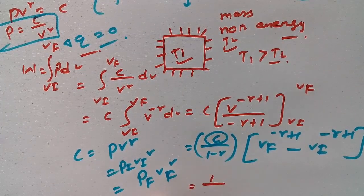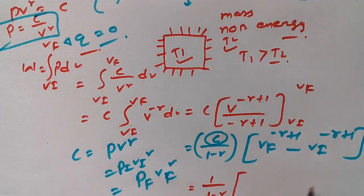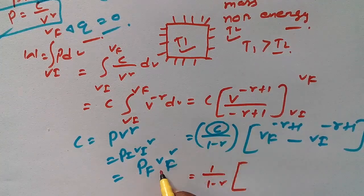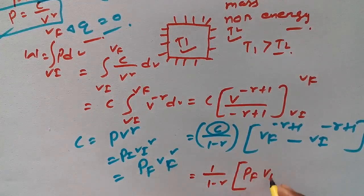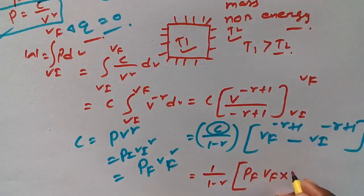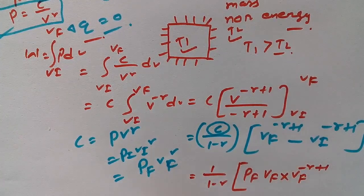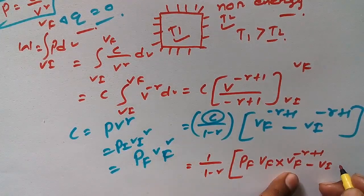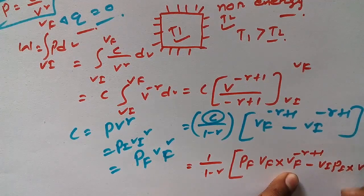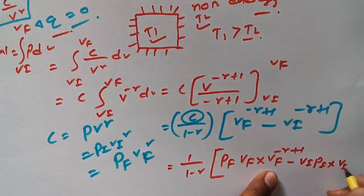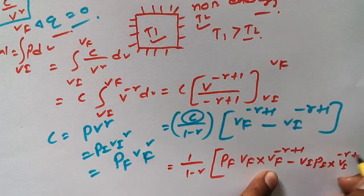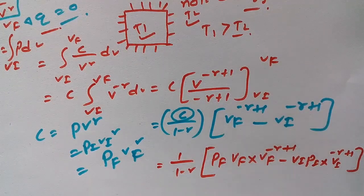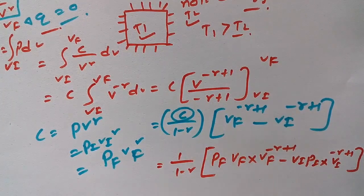What we have is 1 over 1 minus gamma, and we'll put the value of C here as P_F V_F. So P_F V_F times VF to the power minus gamma plus 1, minus P_I V_I times V_I to the power minus gamma plus 1, as I'm just multiplying to simplify this equation. I hope you understand this one.